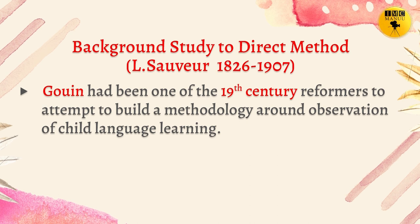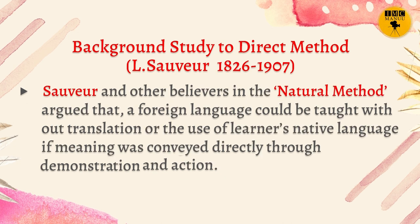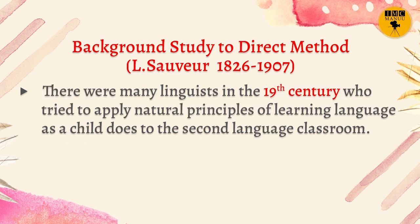Shall we move on to the Direct Method? That is one of the popular methods even in the 20th century. Gwyn had been one of the 19th century reformers to attempt to build a methodology around observation of child language learning. Attempts have been made to make second language learning more like first language learning. Sauveur and other applied linguists who believed in the natural method argued that a foreign language could be taught without translation or the use of the learner's native language, if meaning was conveyed directly through demonstration and action. Natural principles means how a child learns a language from their parents.